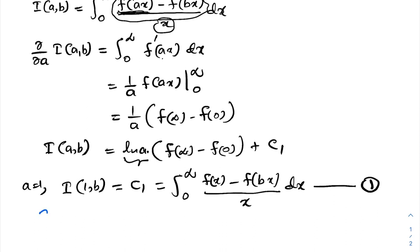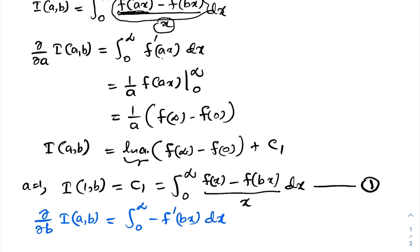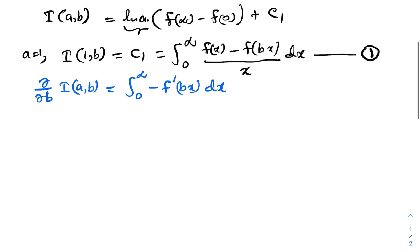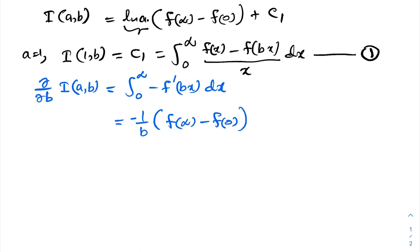Now taking the partial derivative of I(a,b) with respect to b: on the right-hand side, from zero to infinity we get a minus sign, yielding minus f'(bx) dx. Integrating gives minus (1/b) f(bx), and applying limits from zero to infinity gives minus (1/b)[f(infinity) minus f(0)].